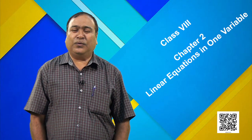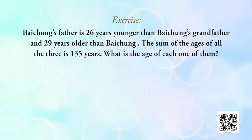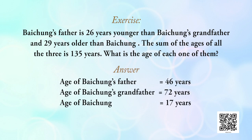I would like to give one word problem for you to solve on your own. Byjoo's father is 26 years younger than Byjoo's grandfather and 29 years older than Byjoo. The sum of the ages of all three is 135 years. What is the age of each one of them? Apply the same technique. For your reference, the answers are: Byjoo's father is 46 years, grandfather is 72 years, and Byjoo is 17 years.